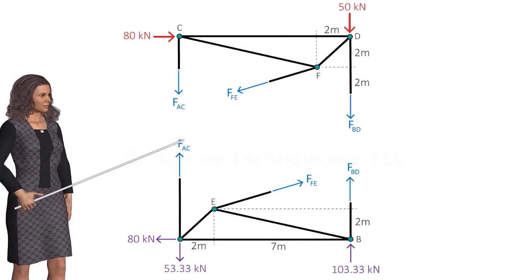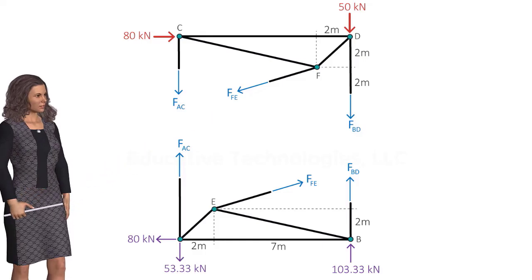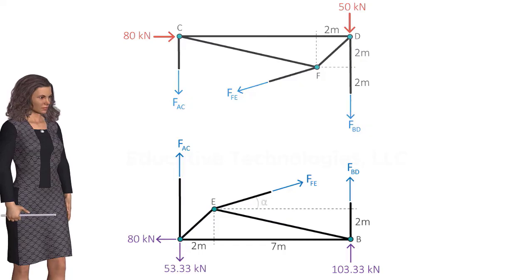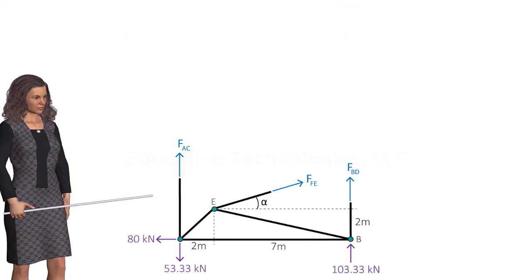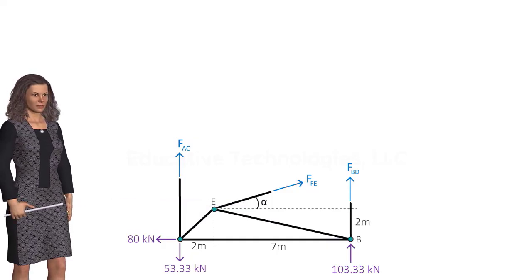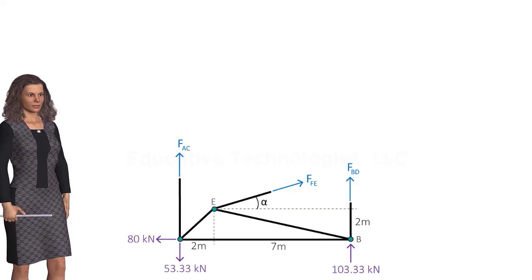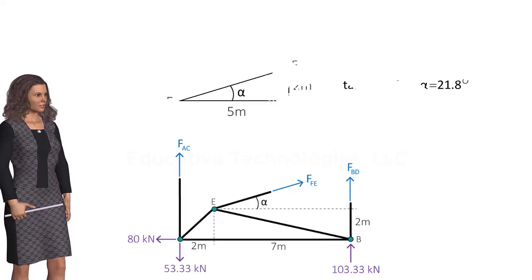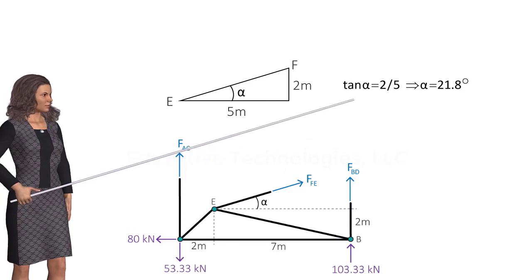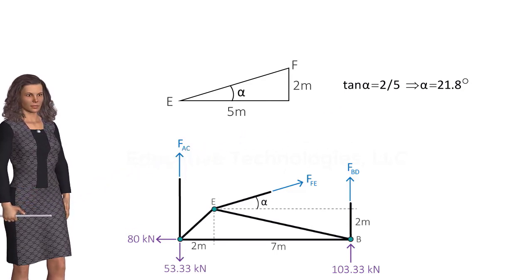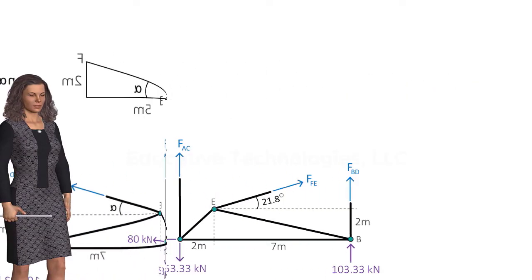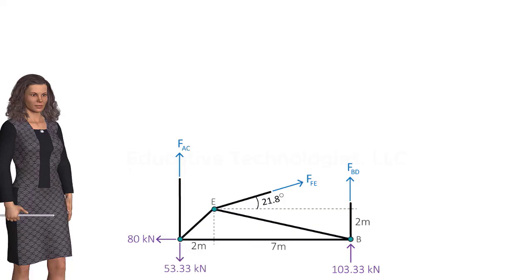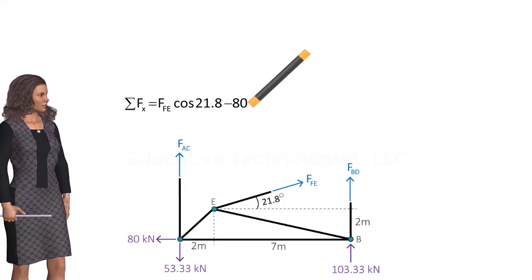We can use either of the two diagrams to calculate the target force. Let's take the lower free body diagram. Note the angle that FEF makes with the horizontal axis — we have labeled this angle alpha. We need to know the angle in order to calculate the unknowns. Using simple trigonometry, tangent of alpha equals 2 over 5, hence alpha equals 21.8 degrees. To determine FEF, we set the sum of the forces in the x-direction to zero and solve for the unknown force.